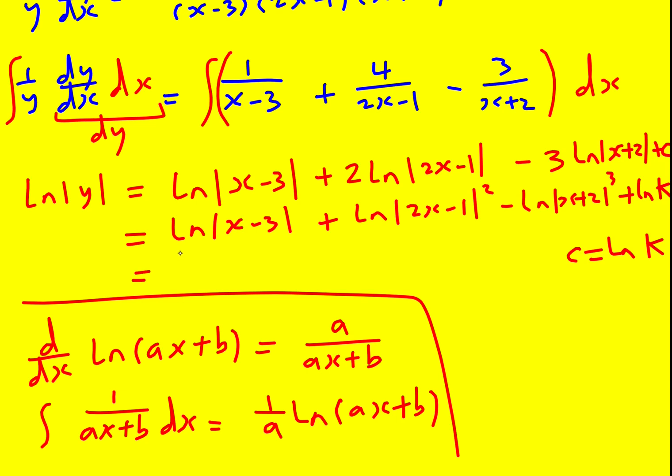And that means it's going to be ln with a big modular sign. Then it's going to be x minus 3 times 2x minus 1 all squared. But then I'm dividing because I'm minusing the log. It's in the form ln a minus b, which is a over b inside the log. So x plus 2 cubed. And don't forget we've got the ln k, so I can just stick it there.